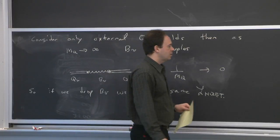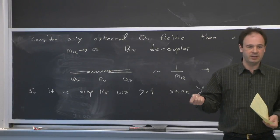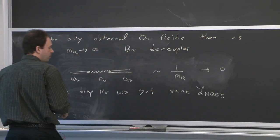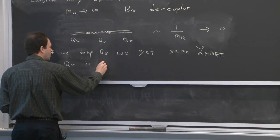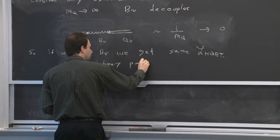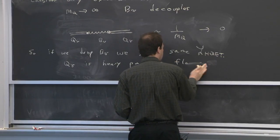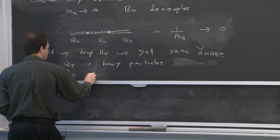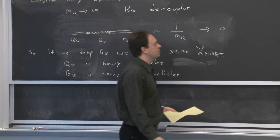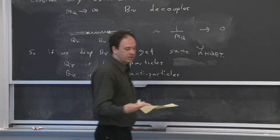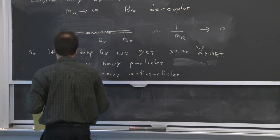Physically, what's going on with these two fields is that Q_V corresponds to the particles — we have a heavy quark, it's got particles of that mass and flavor. B_V corresponds to the antiparticles of this flavor. By making the phase redefinition, we chose to focus on on-shell fluctuations that are close to the particles. If we'd chosen the opposite phase — plus i — then we could expand about the antiparticles, and things would have worked out the opposite way.